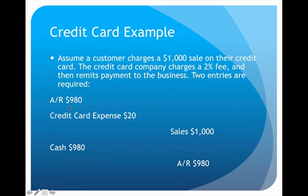Because of the two percent fee, we only receive 98% of the money: $1,000 × 0.98 = $980. So accounts receivable is debited for only $980, creating a $20 discrepancy. That $20 goes to credit card expense as a debit. We essentially lost $20 by accepting the credit card, but maybe it's worth it to avoid bearing any risk and to encourage the customer to make the purchase.